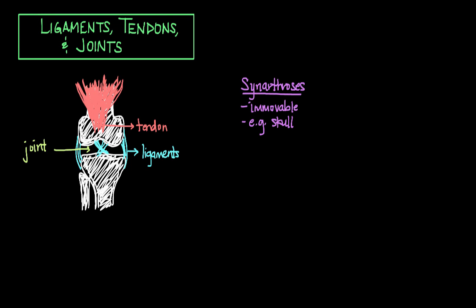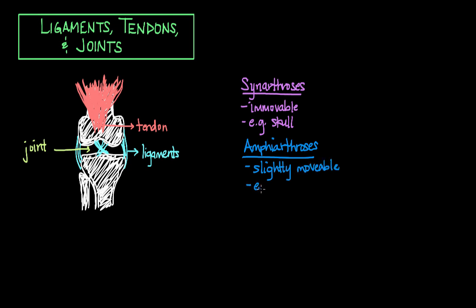The next type of joint is called an amphiarthroses. Amphi meaning it's both stiff but also slightly movable. An example of amphiarthroses would be your vertebral joints.